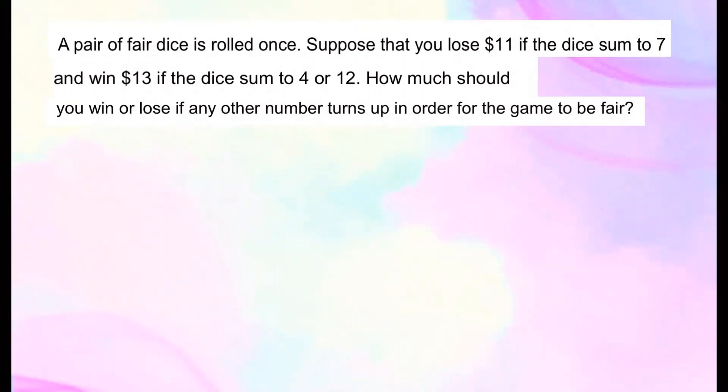Okay, let's take a look at this example. A pair of fair dice is rolled once. Suppose that you lose $11 if the dice sum to 7 and win $13 if the dice sum to 4 or 12. How much should you win or lose if any other number turns up in order for the game to be fair?